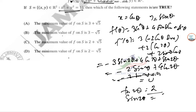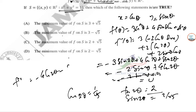For the second derivative test: f''(θ) = −4cos(2θ) − 8sin(2θ). With cos(2θ) = 1/√5, we find f''(θ) < 0, confirming the function has a maximum value at this critical point.